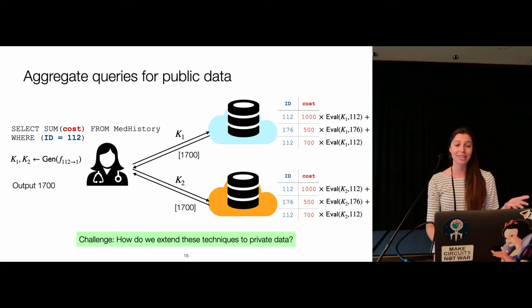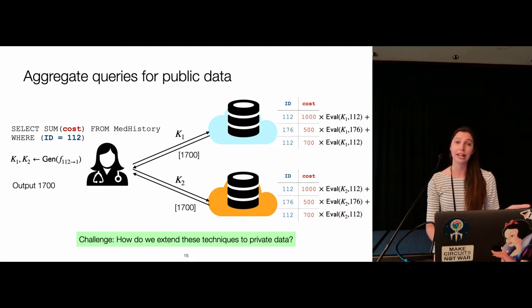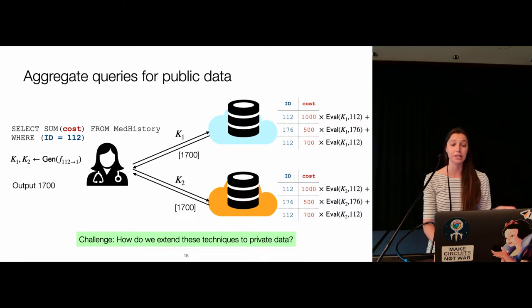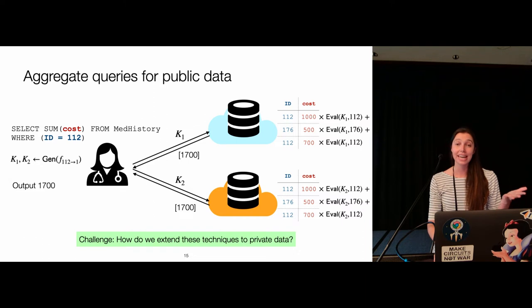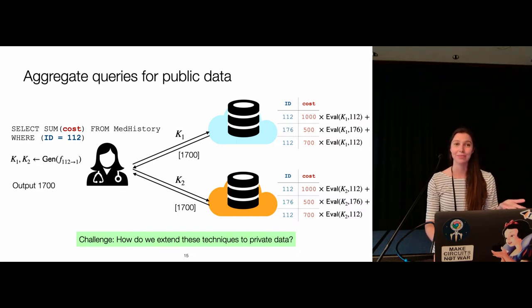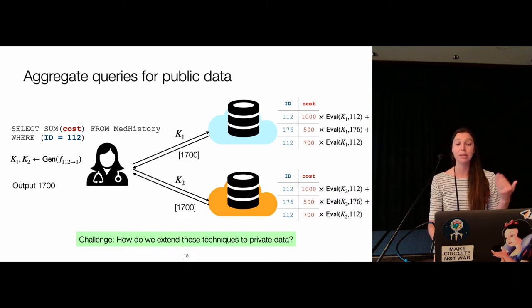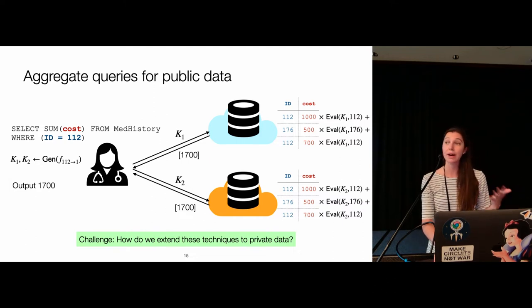It's straightforward to compute queries for public data, but the real challenge is extending these techniques to private data. In this setting, the FSS eval routine takes as input the value being evaluated — but what if that value is itself private? The server is computing some predicate without actually knowing the data stored at the server.